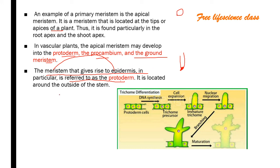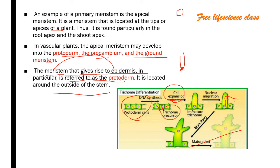Protodermal cells undergo DNA synthesis to form a trichome precursor. By cell expansion, it forms an immature trichome. Then the nucleus migrates into this area, branching takes place, maturation of the protoderm happens, and the trichome differentiates from a protoderm cell.